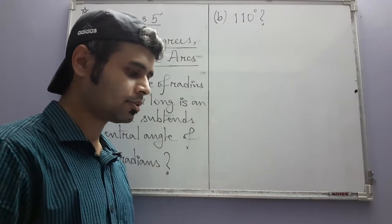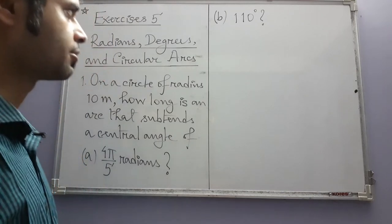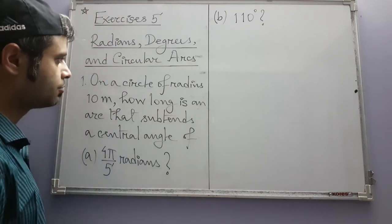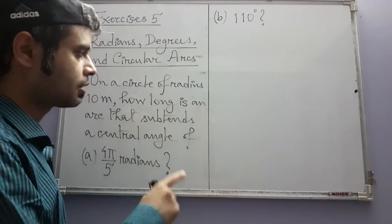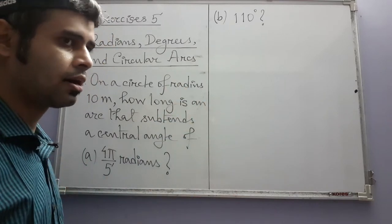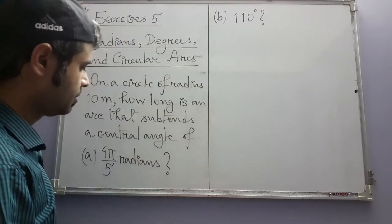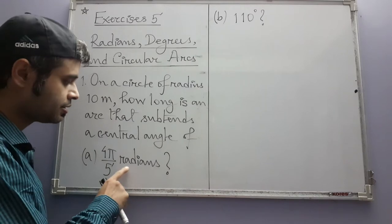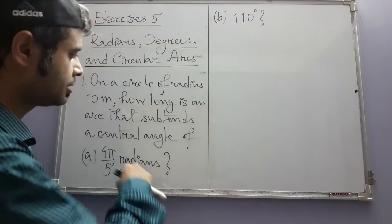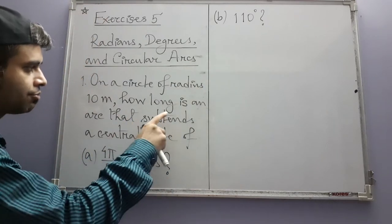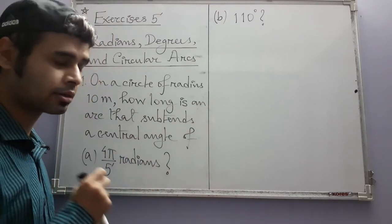We are going to start solving exercises on trigonometric functions. In the first exercise, we have a circle of radius 10 meters. On this circle there is a circular arc that subtends some angle at the center. That angle is given once in radians and once in degrees — two different cases. We have to find how long the circular arc should be.